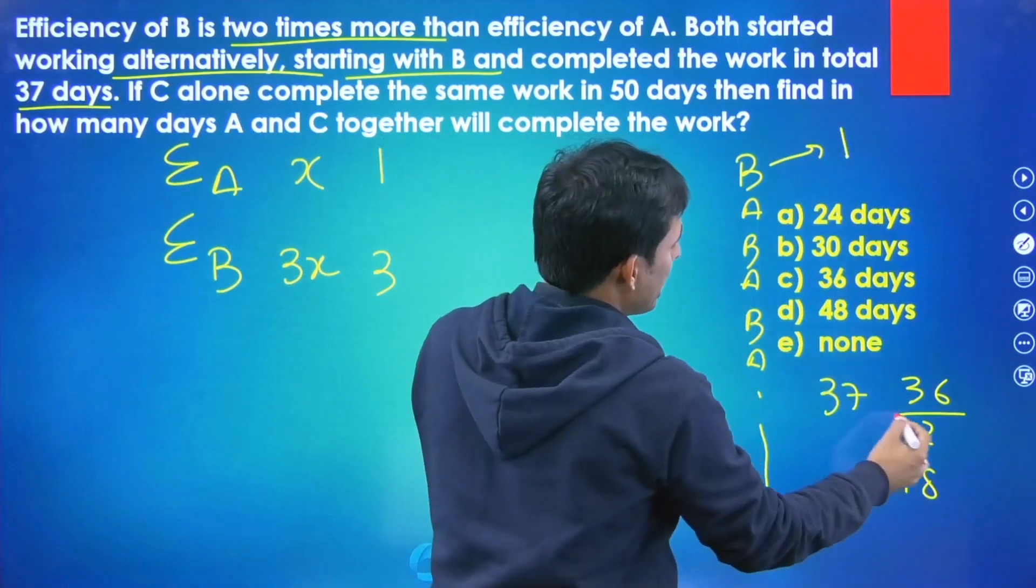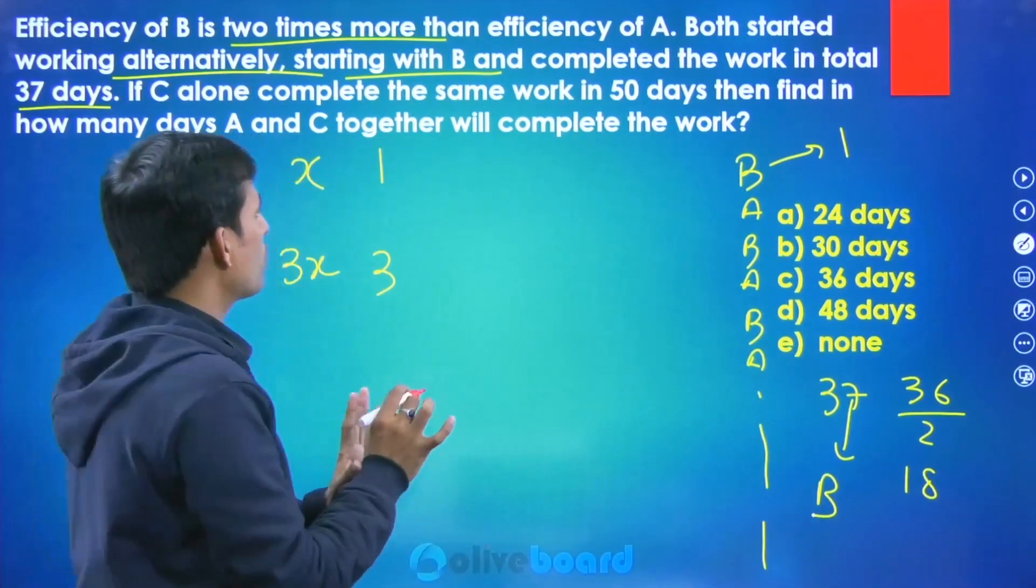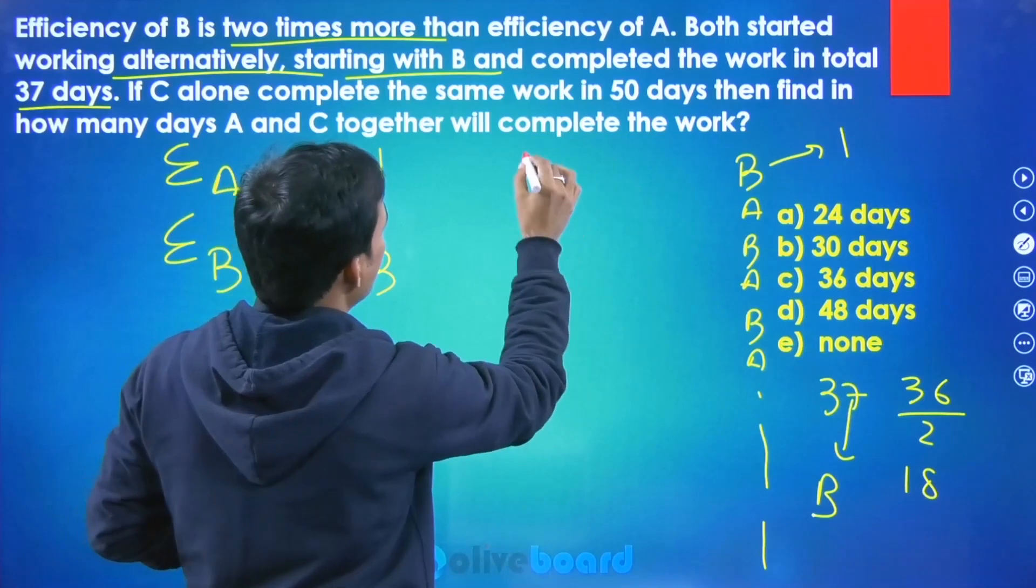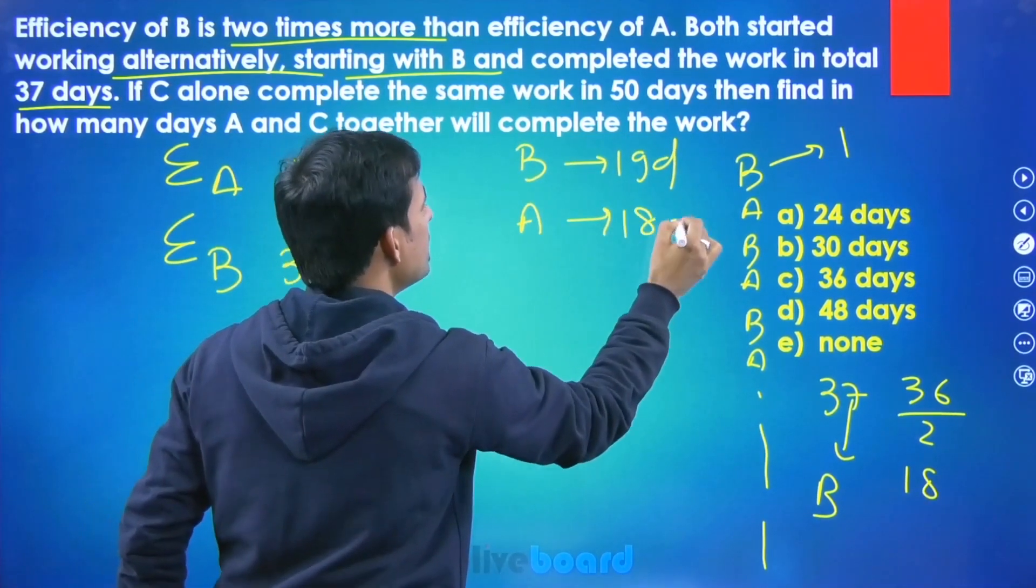So one more day added to B. So according to the question yaha pe B will work like 19 days to A will work like 18 days. This is the concept behind alternative, correct.